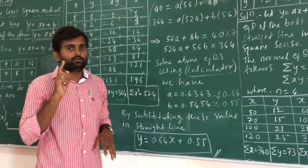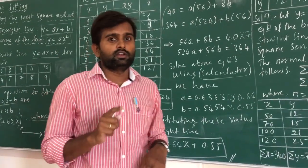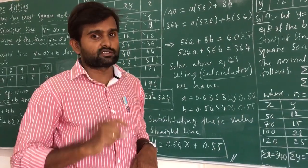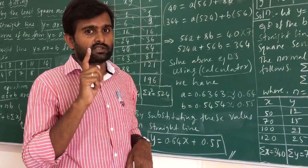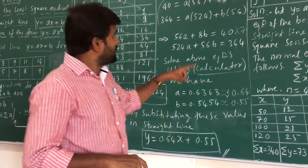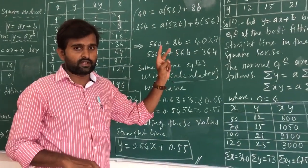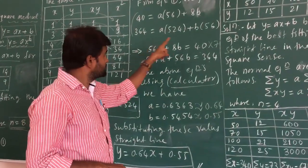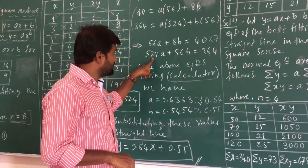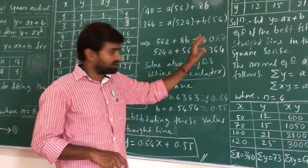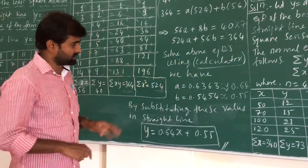It is better to use a calculator. Select mode on the scientific calculator, then select equation mode (EQ). Choose how many variables — there are two variables, so select 2. Then enter the coefficient of a, coefficient of b, and the right-hand side value for each equation. The calculator will give you the two variable values directly.